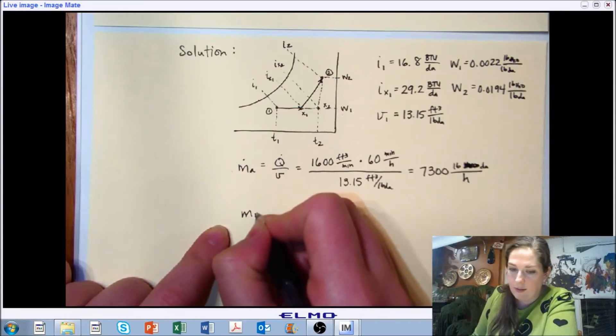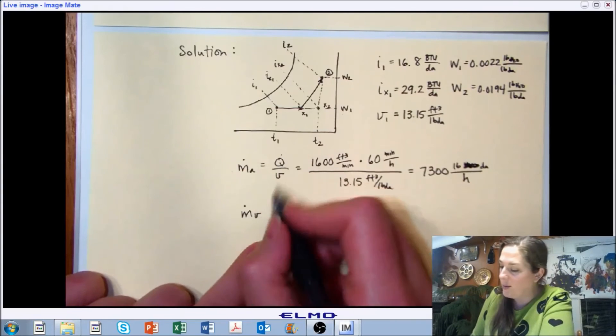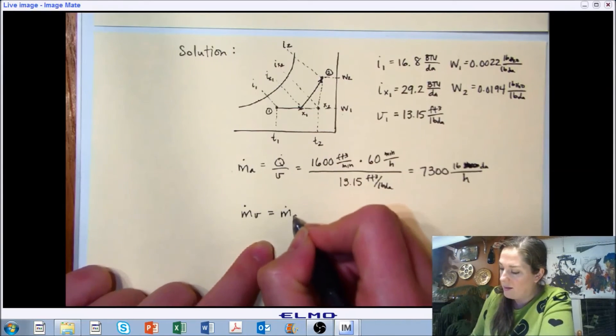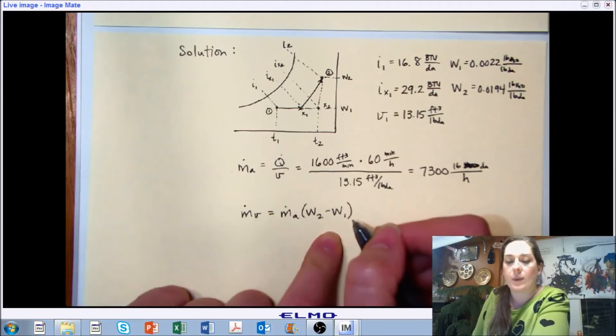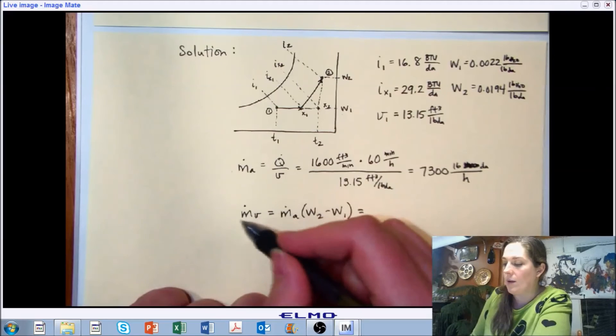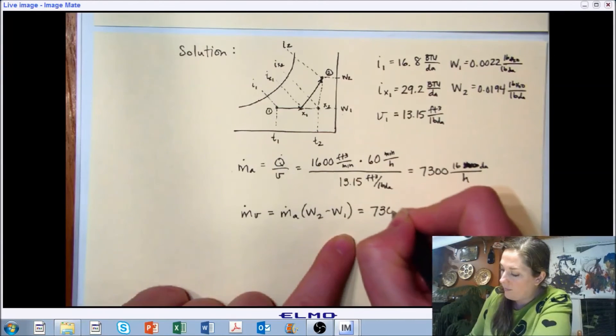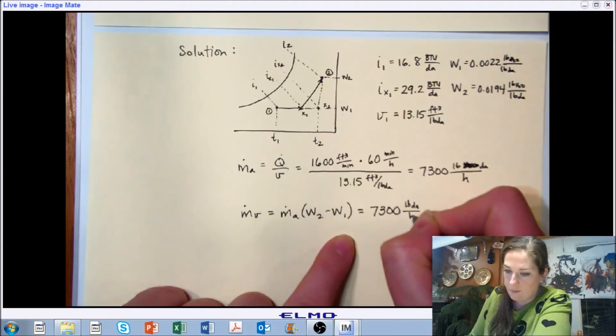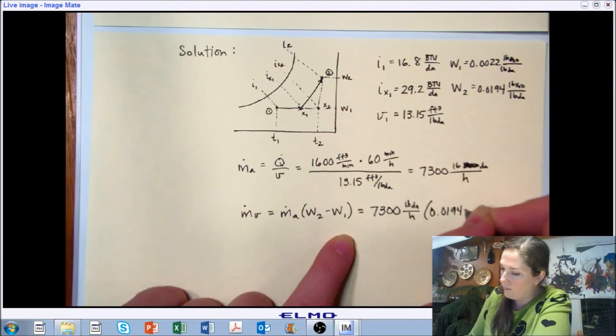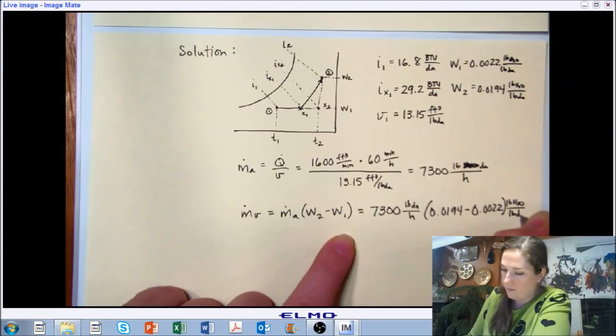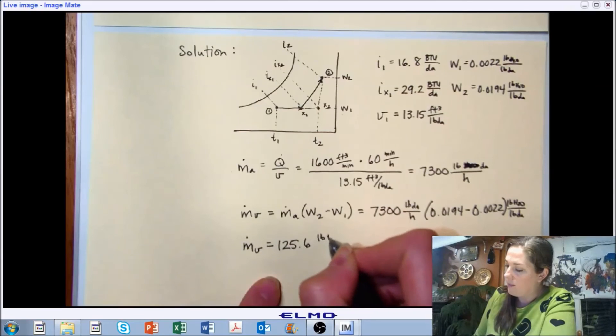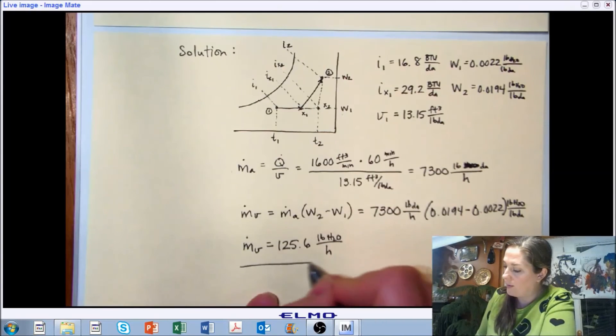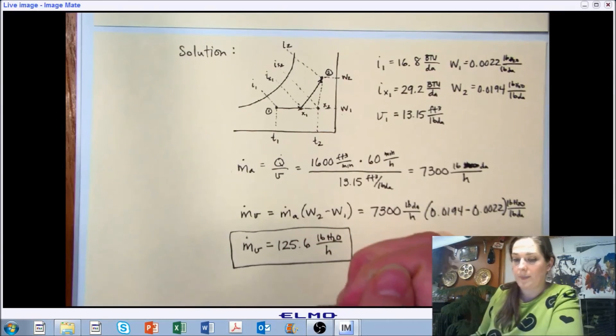And then if we want to look at the amount of water, this is where I've got to head on my units. And it's related by the amount of air we're moving and the change in moisture content of that air. So this is the amount of vapor that we're going to need to supply. And so the amount of vapor that we need works out to be 125.6 pounds of water per hour. That's a lot of moisture.